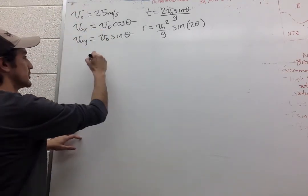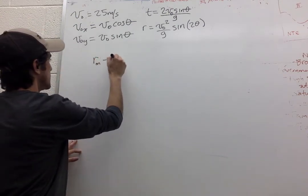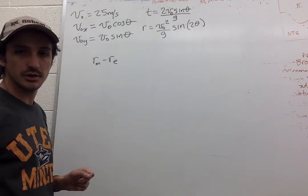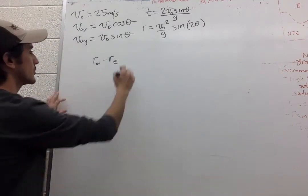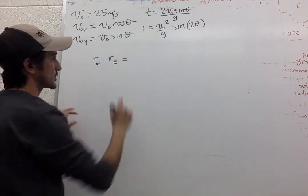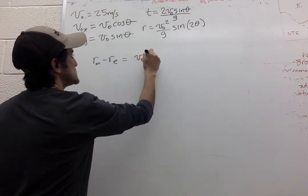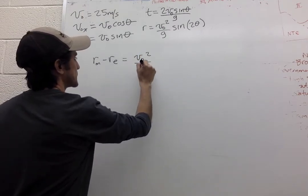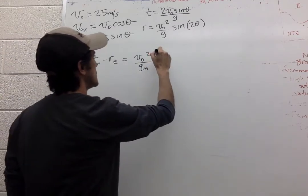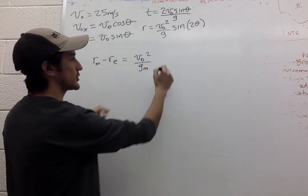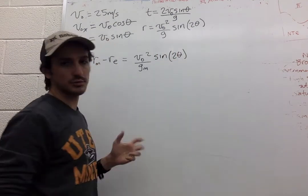So we just want to know the difference between the range on the Moon and on Earth. So the conditions will be the same. This is the acceleration due to gravity of the Moon. Initial velocity is the same. Sine of two theta is the same.